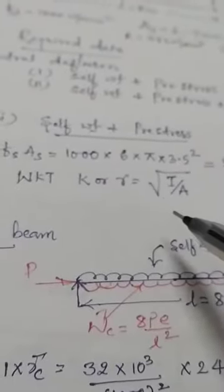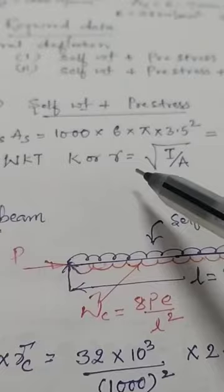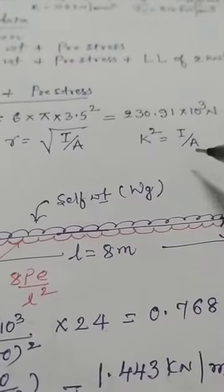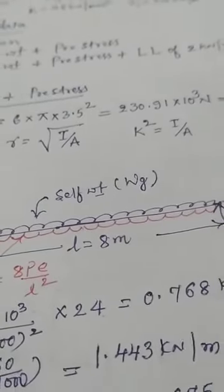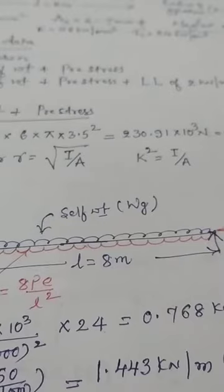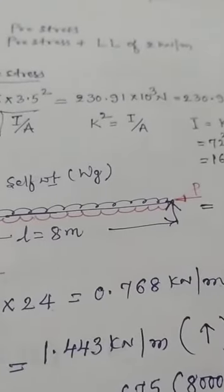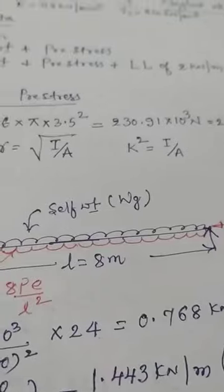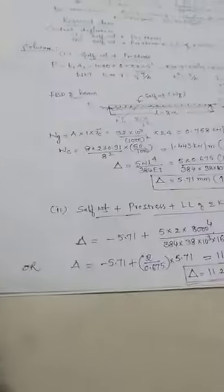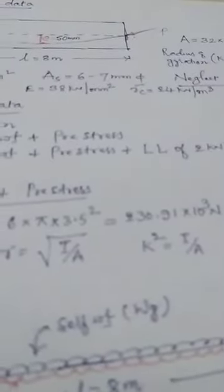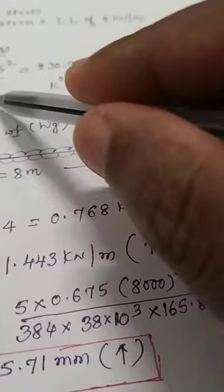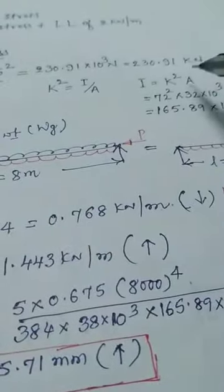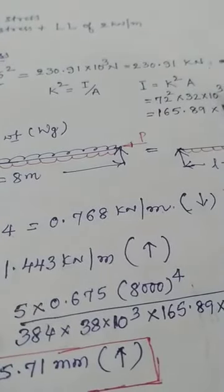The moment of inertia I is calculated from the radius of gyration: k = √(I/A), so squaring both sides gives k² = I/A, therefore I = k² × A. Note: I equals k-squared times A — it is not k times A-squared. Remember to use the correct form.